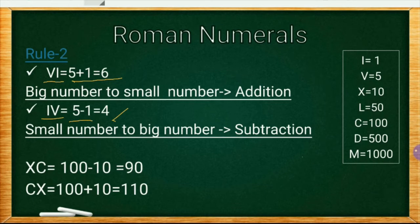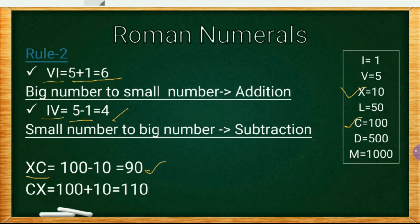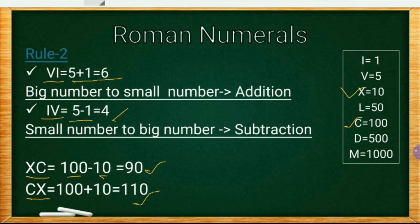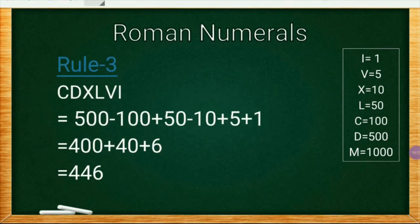Let's take another example: XC. X is 10 and C is 100. X is smaller than C, so the value is 100 minus 10, which is 90. You must notice that in both cases, I made the subtraction from the bigger number minus the smaller number, even though the smaller one comes first. This is because Roman numerals do not use negative numbers.